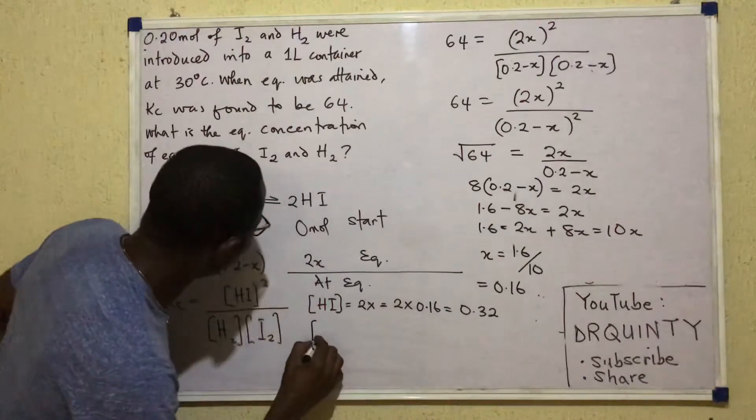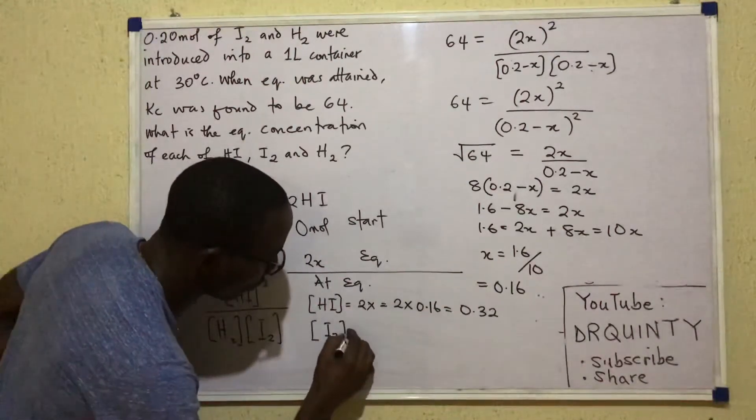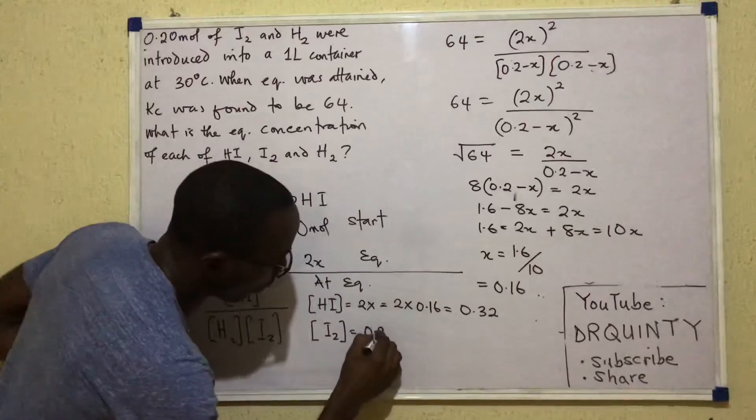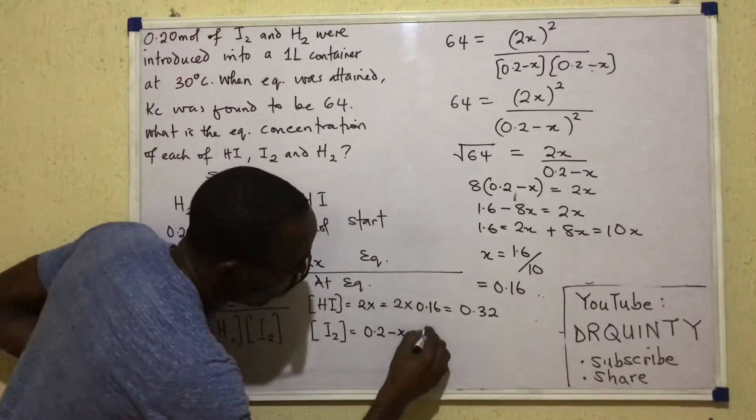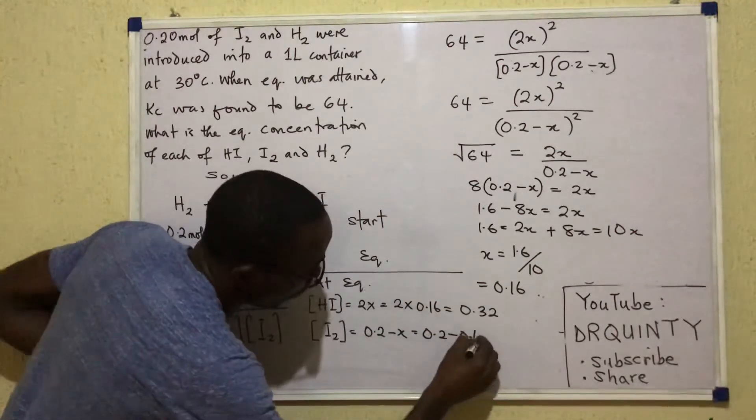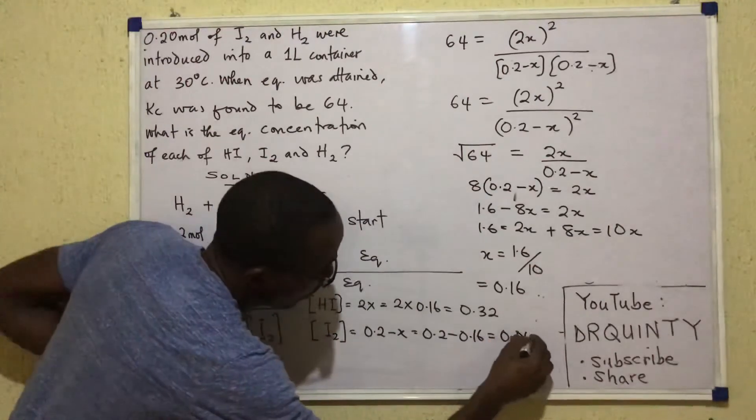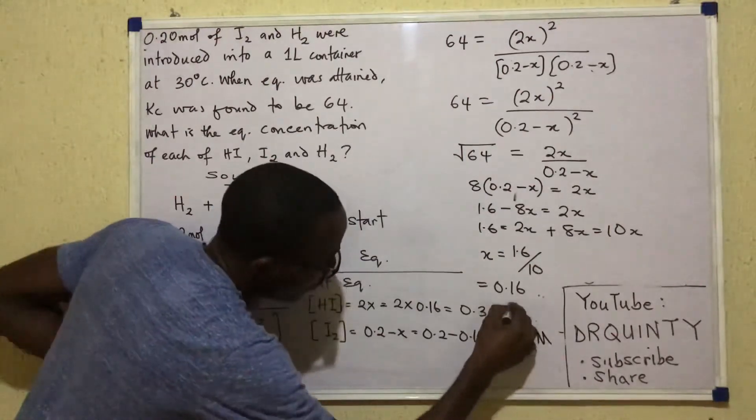Then the equilibrium concentration of I2 will be equal to 0.2 minus X which is 0.2 minus 0.16 and that's 0.04 moles per dm cube.